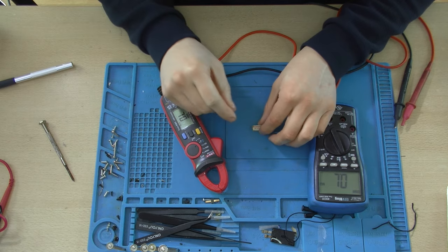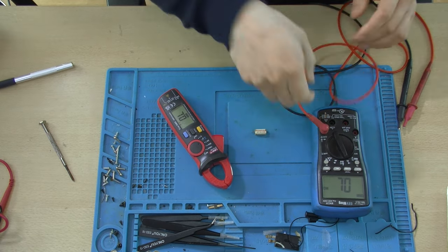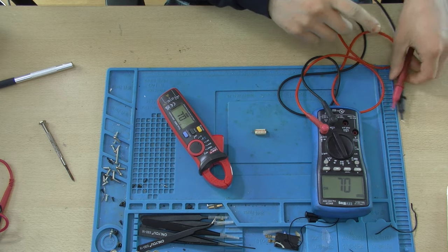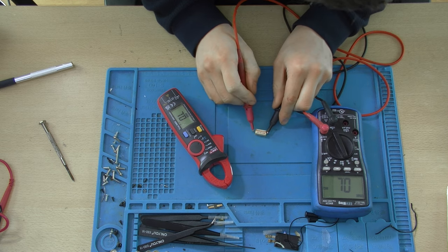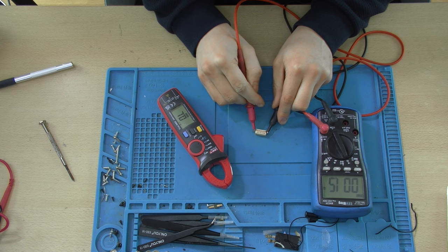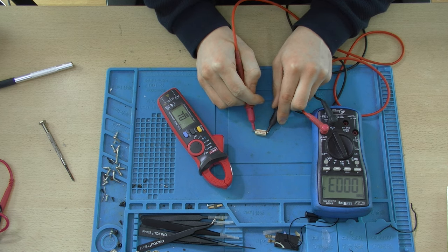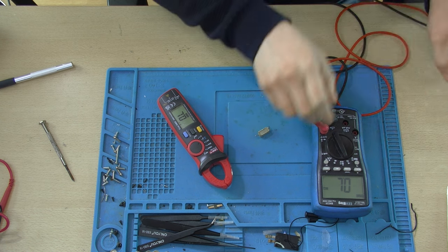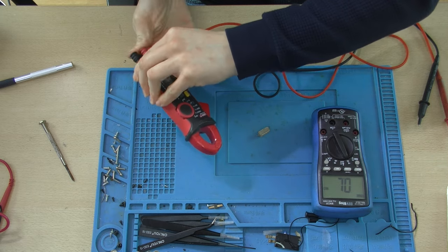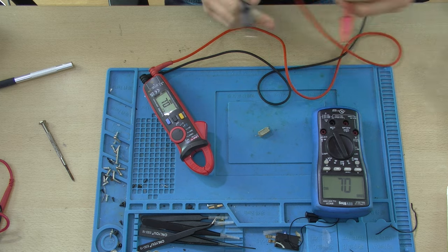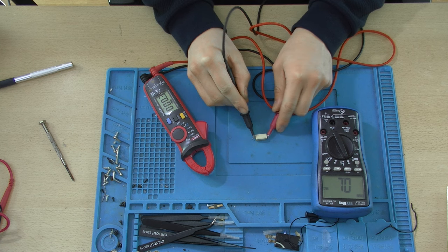So let's get this one. This is a 0.33 ohm resistor. That's a tolerance of 10%. Let's see what the Brymen makes of this. 0.3 which is to be expected. Let's see what the Unity makes of this. 0.3. So they're equal. Alright. Cool.